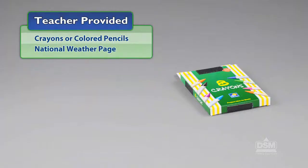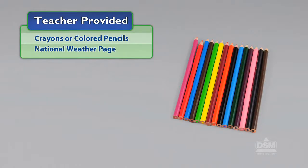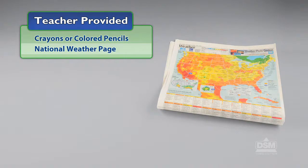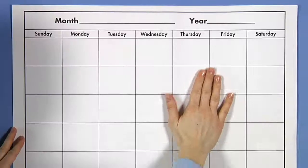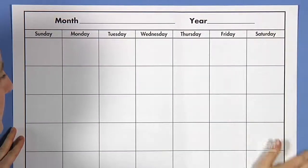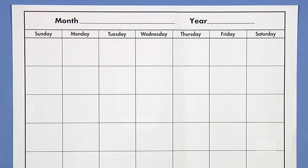You will also need to provide crayons or colored pencils and a national weather page. To prepare for Session 1, make a copy of Activity Sheet 1 for each student, and hang the first monthly calendar sheet in a convenient location for recording daily weather conditions.